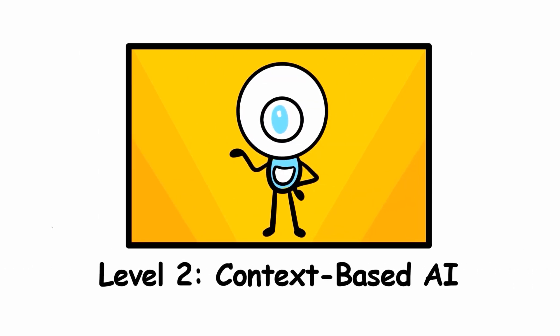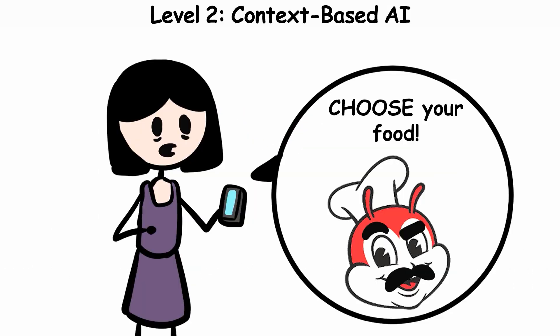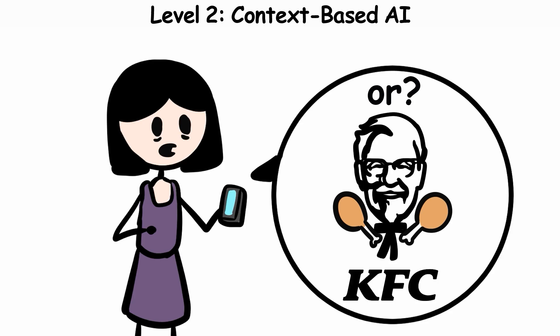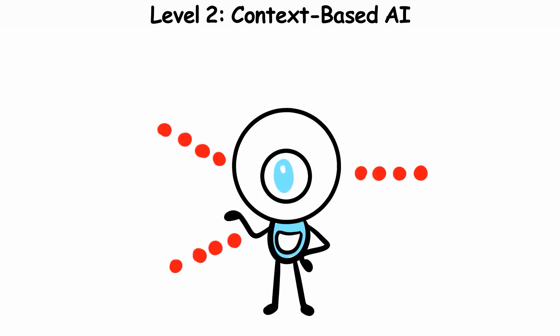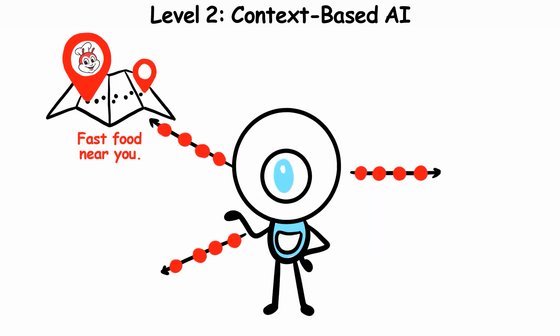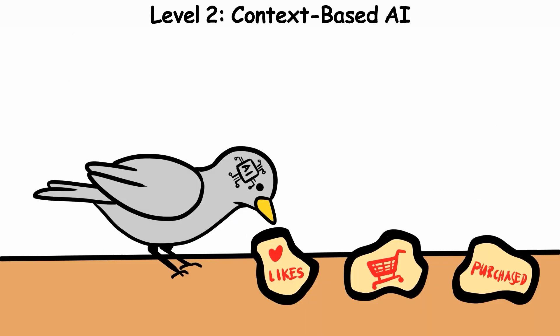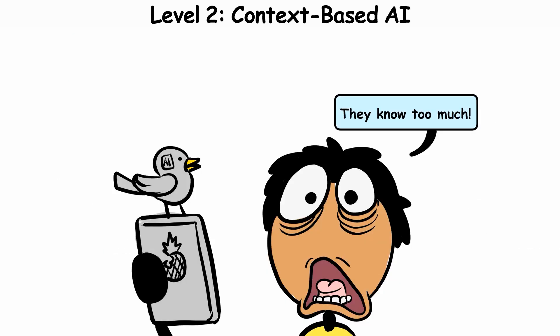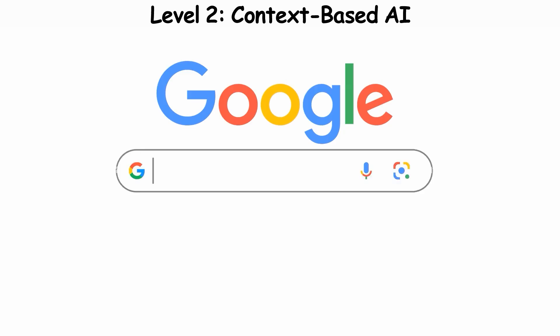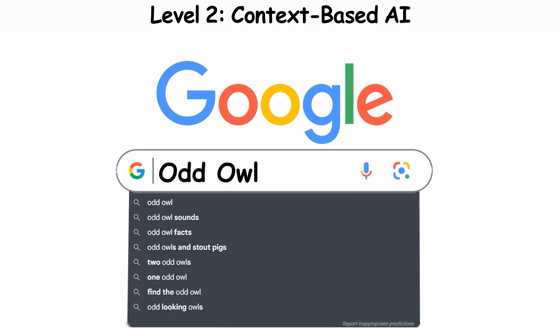Level 2, Context-Based AI. Contextual AI is the ultimate stalker who knows you're hungry before you do. It connects dots you didn't know existed, tracking your location, preferences, and every digital breadcrumb to deliver eerily personalized experiences. In the early 2000s, Google evolved from matching keywords to guessing what you meant.